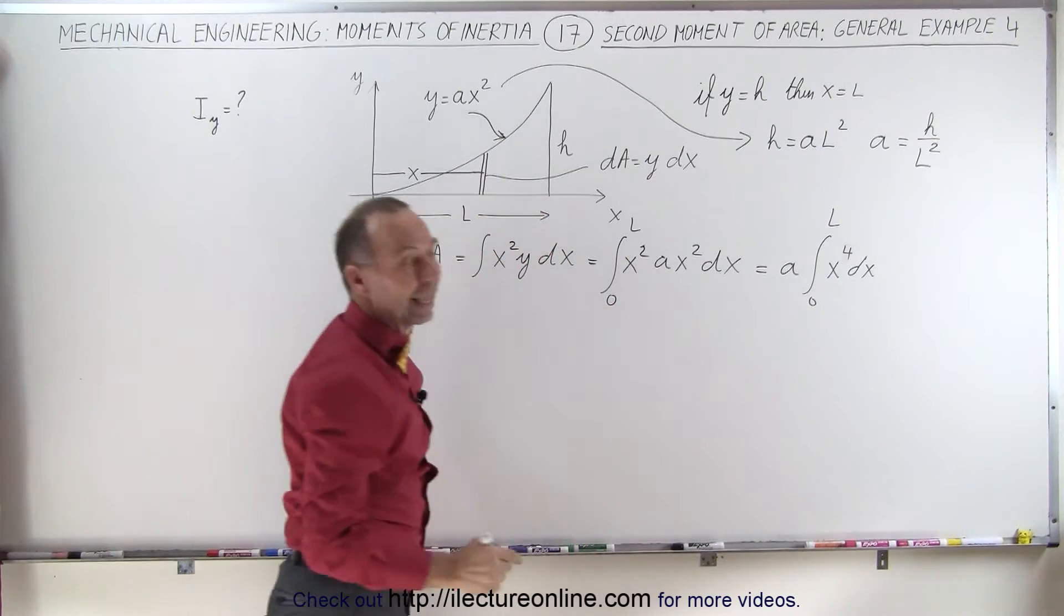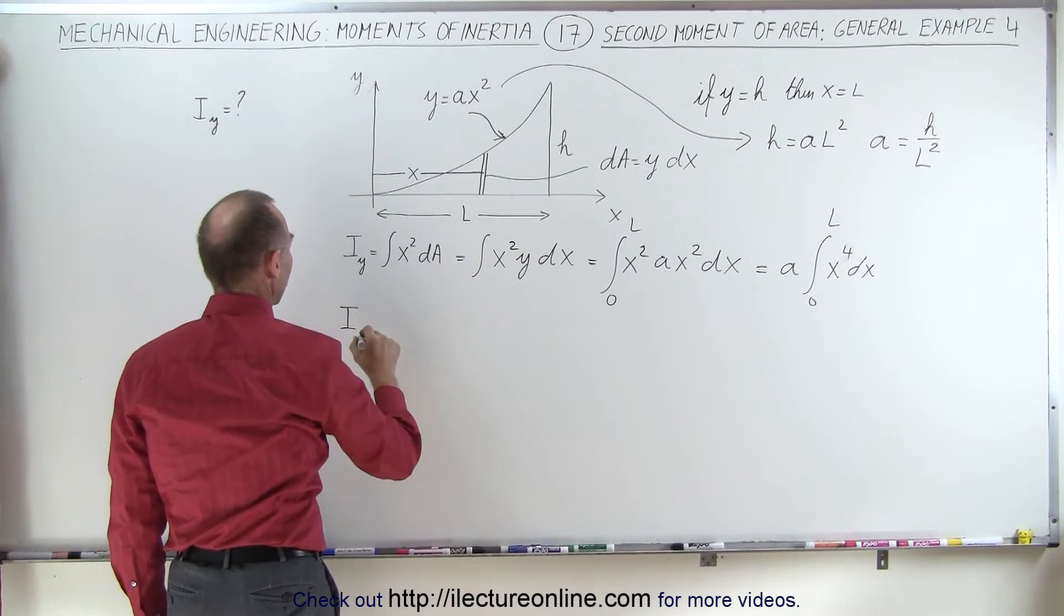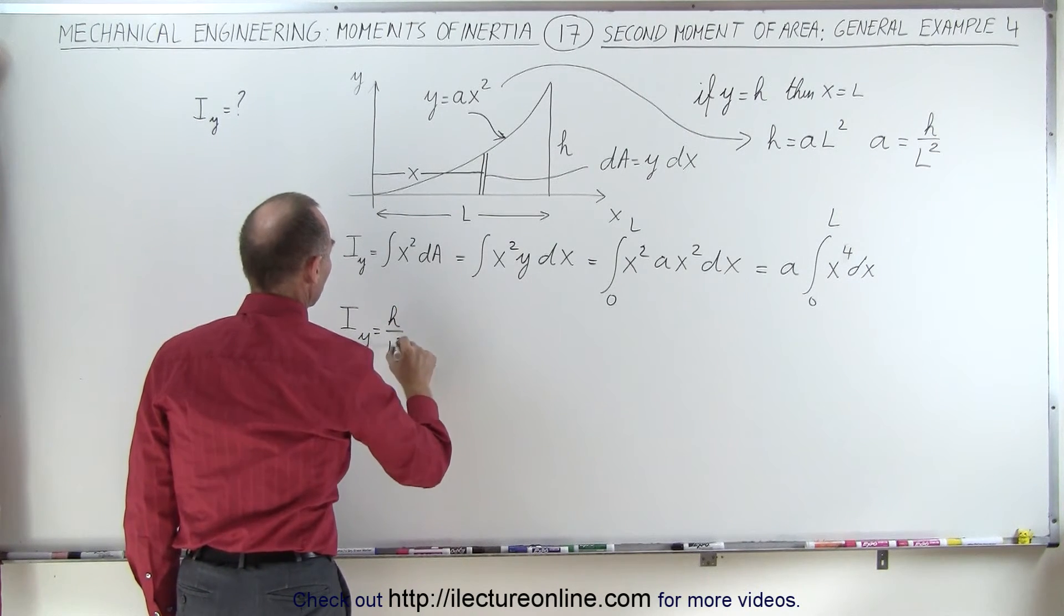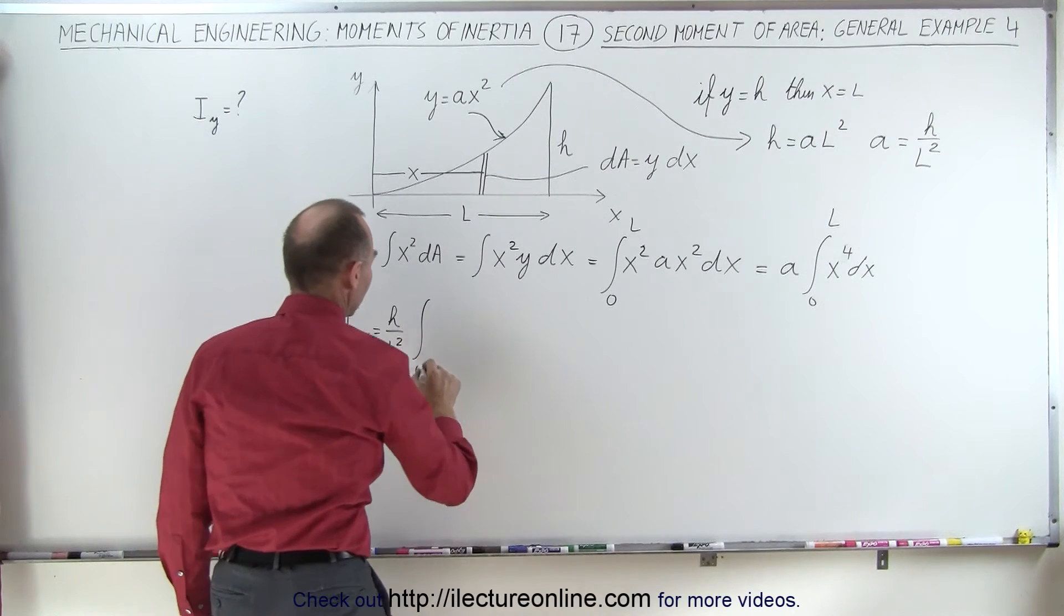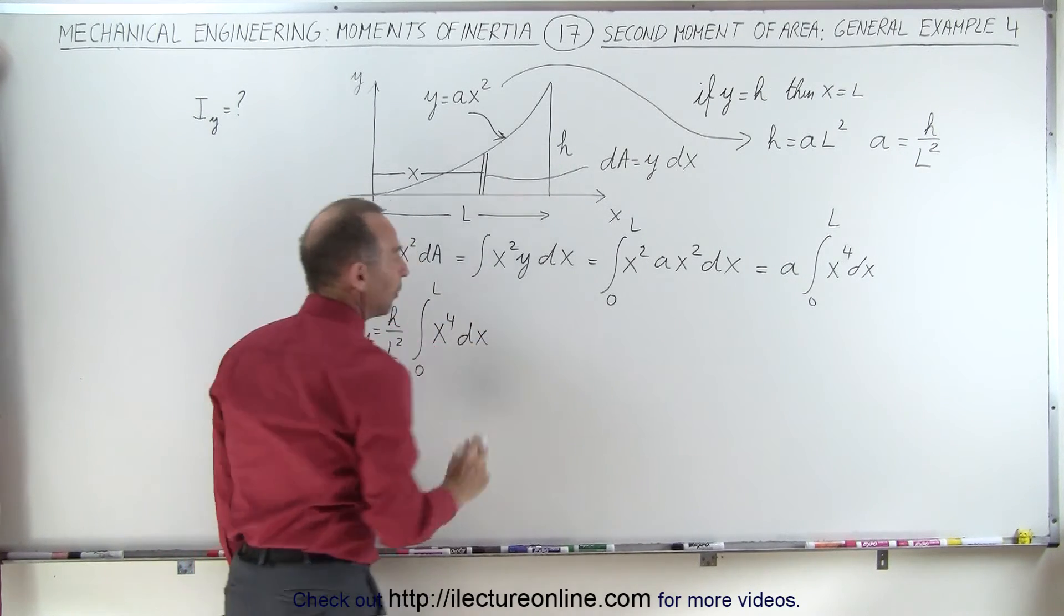Let's replace this by H over L squared, which means that the second moment of area with respect to the y-axis is equal to H divided by L squared times the integral from 0 to L of x to the fourth power dx. Now we're ready to integrate.